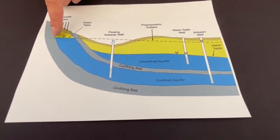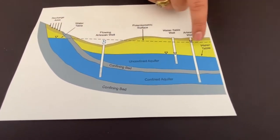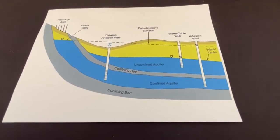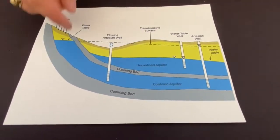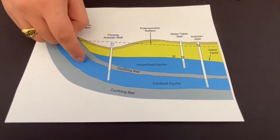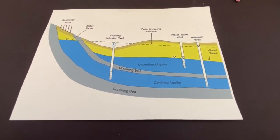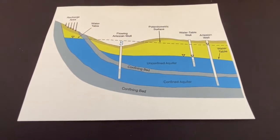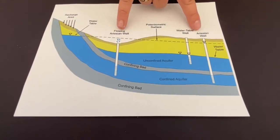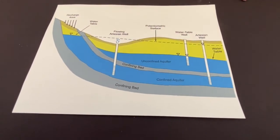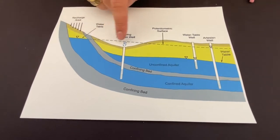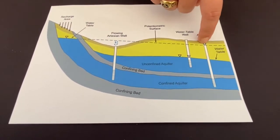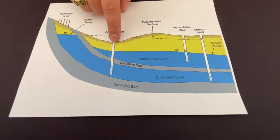The dotted line going across the top of the diagram is called the potentiometric surface, which is the theoretical level that the water of the confined unit would rise to. Since it only applies to the confined aquifer, it only applies to these two artesian wells. You can see that the surface line only crosses one of the wells, but it does not cross the other.